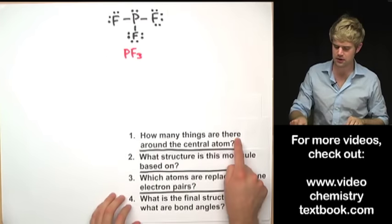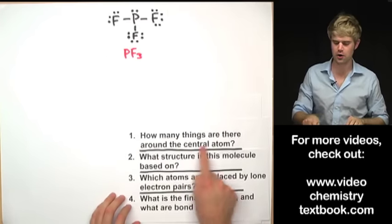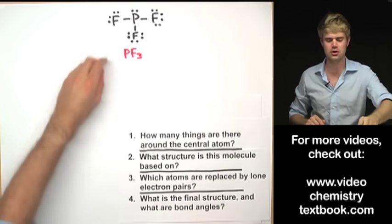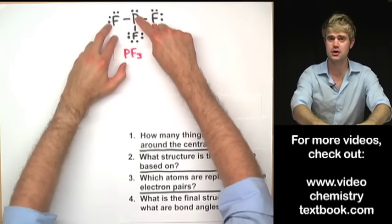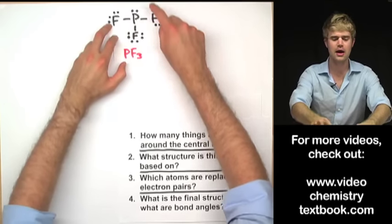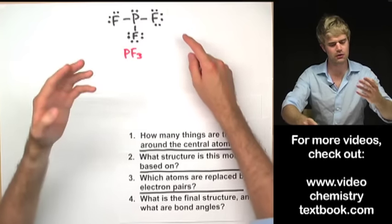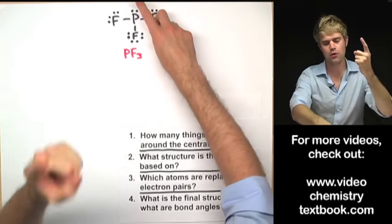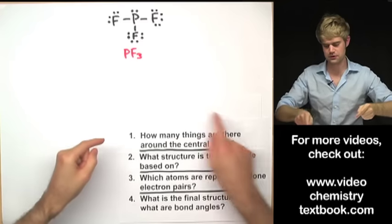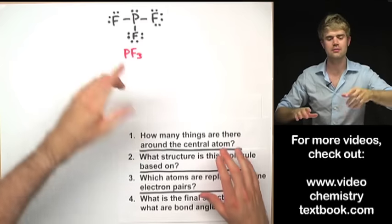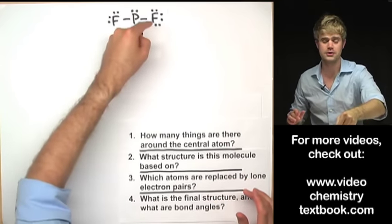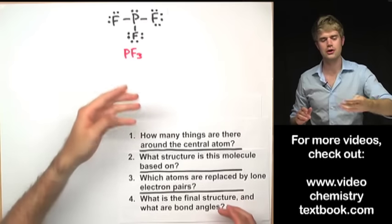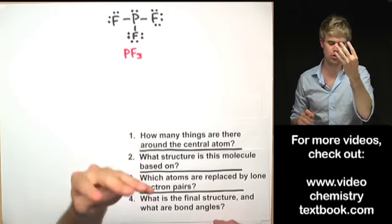The first question is: how many things are there around the central atom? Here the central atom is P, and it's surrounded by three bonds and one lone electron pair. Things around the central atom can be either lone electron pairs or bonds. So we have three bonds and one lone electron pair — four total things.